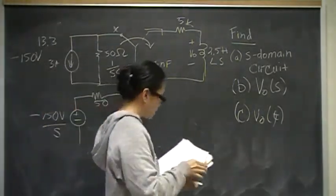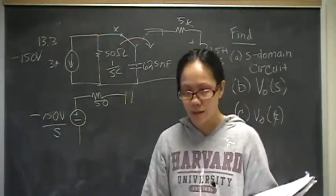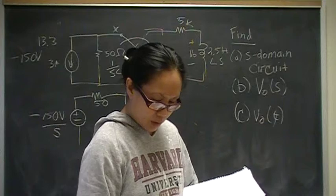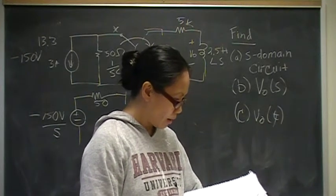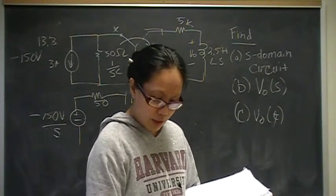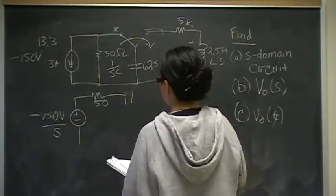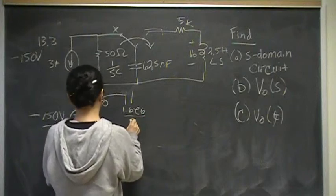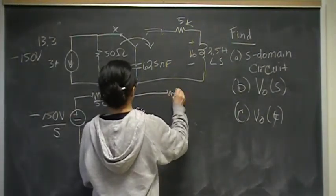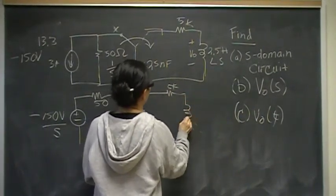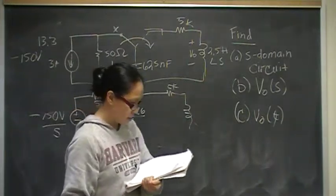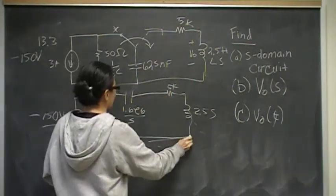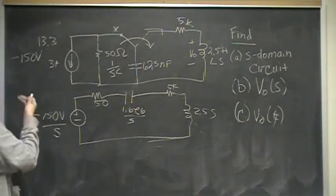That's going to be in series with the capacitor, which has value 1 over SC. Actually, I just called it 1 over SC, and I never actually did the calculation. So, 1 divided by 625E minus 9. This is going to be 1.6E6 over S. Then over here, we have 5K. Then over here, LS is 2.5S. So, that is my circuit in the S domain. I think it's pretty cool because now it's just a series circuit. All that information is incorporated here.